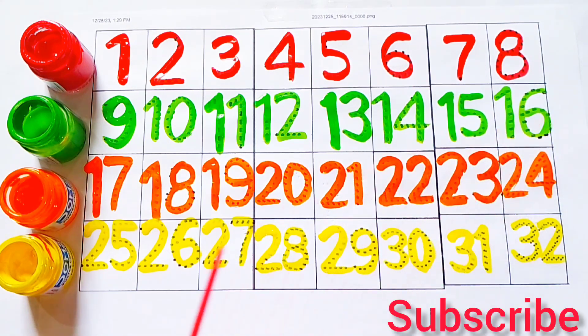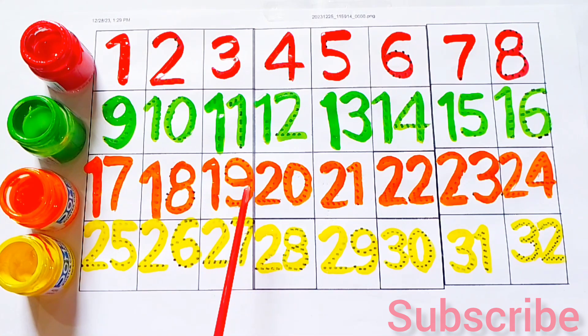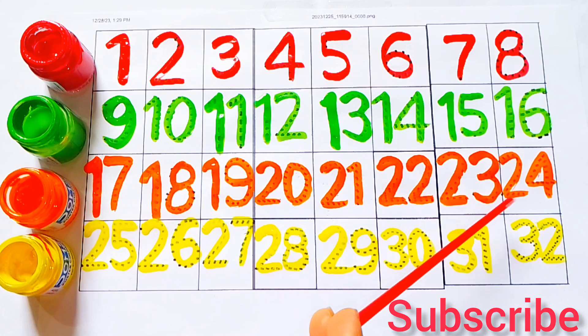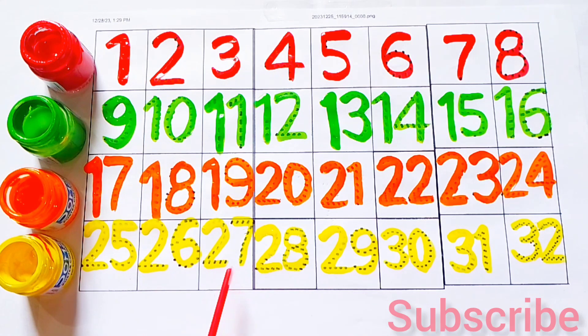17, 18, 19, 20, 21, 22, 23, 24, 25, 26, 27, 28, 29, 30, 31, 32.